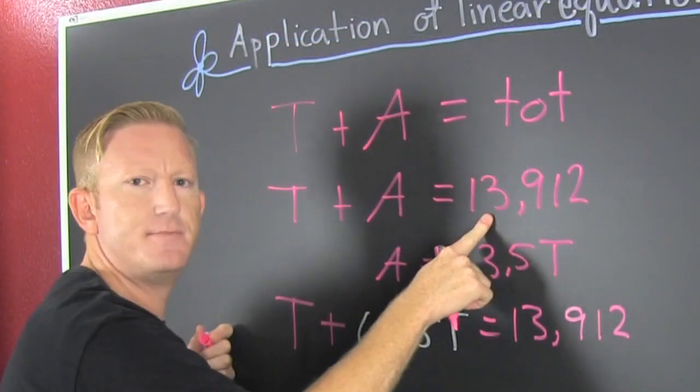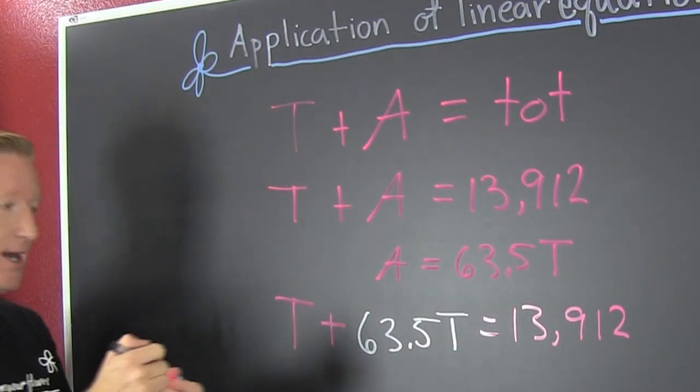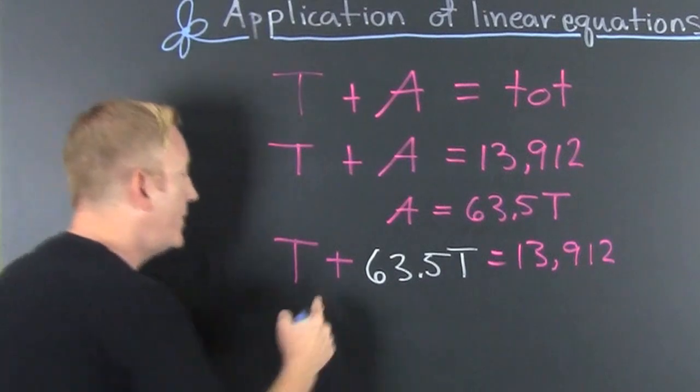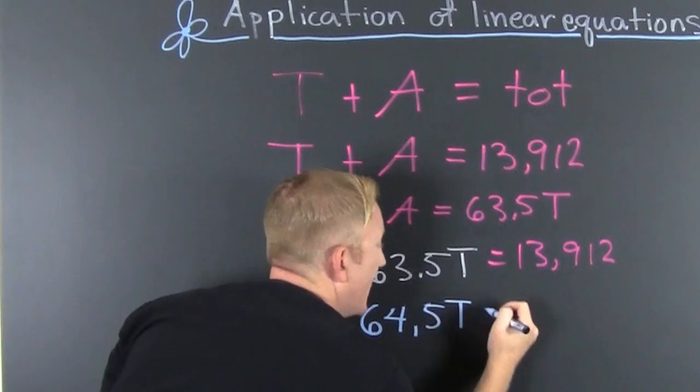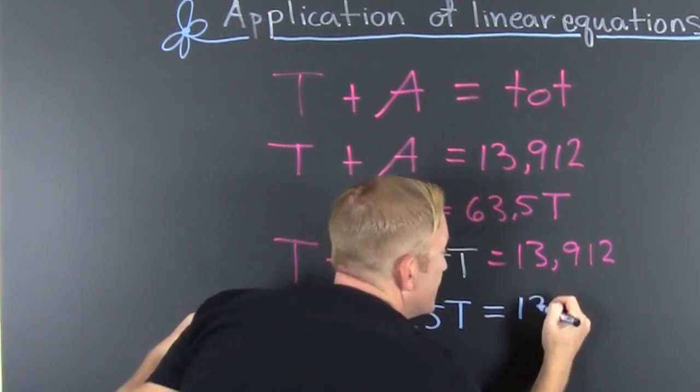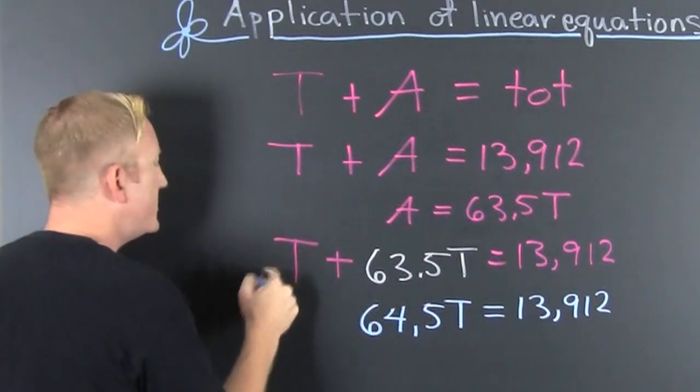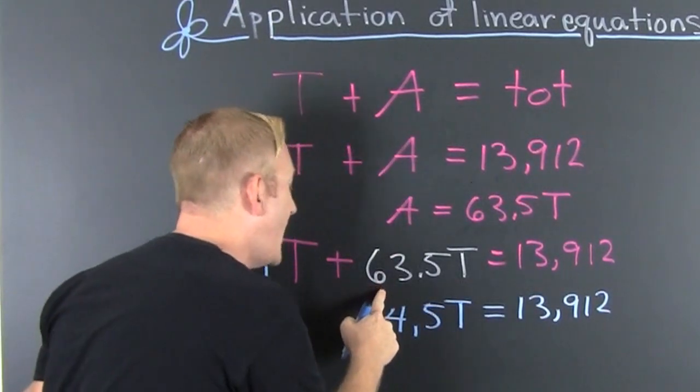Now gather, collect, and combine, and we find that there's going to be 64.5 times the taffy, and that's going to be 13,912. Why? Because you can see a one in front of here, and one plus 63.5 is 64.5T. Finish him!